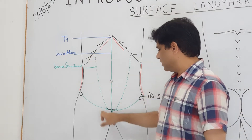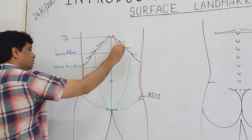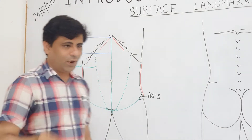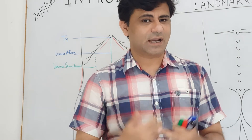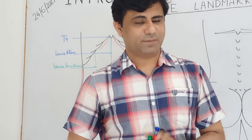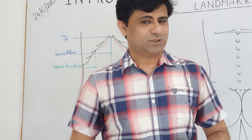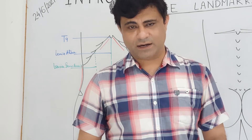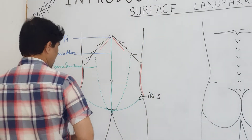The linea semilunaris extends from the pubic tubercle up to the tip of the ninth costal cartilage. One line which overrides the linea semilunaris is the milk line of Schalk. The milk line of Schalk is a continuation of the anterior axillary fold along the anterior axillary line, passing through the nipples, then to the tip of the ninth costal cartilage, and reaching down to the pubic tubercle. In the lower portion, linea semilunaris is the same as the milk line. The milk line of Schalk is the line on which you find supernumerary nipples, especially in quadrupeds.